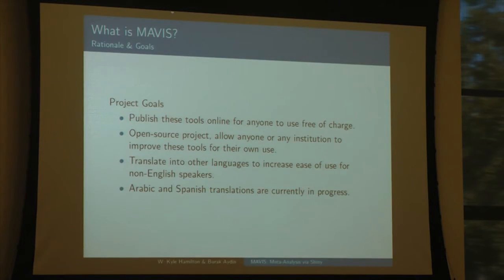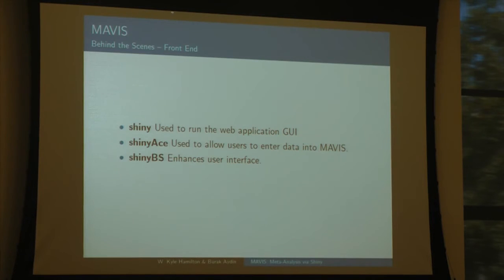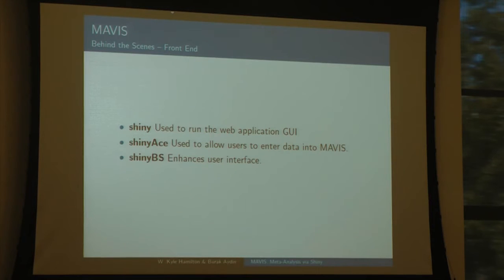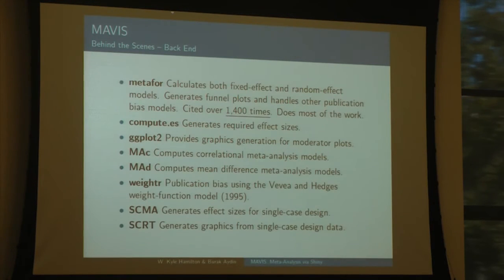For the front end, clearly it's Shiny. ShinyMase is used to let people enter data. A lot of Shiny apps have people upload a CSV file, but I found this kind of a barrier for entry for people who aren't used to using more advanced methods. So we use ShinyMase to do data entry, and ShinyBS is used to enhance warnings.